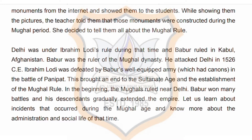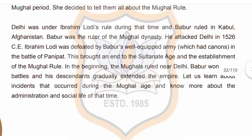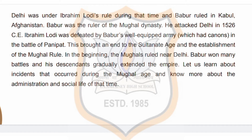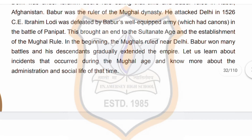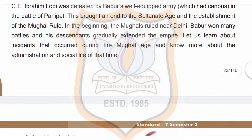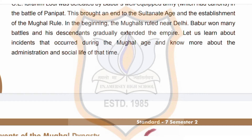Delhi was under Ibrahim Lodi's rule during that time, and Babur ruled in Kabul, Afghanistan. Babur was the ruler of the Mughal dynasty. He attacked Delhi. In 1526 CE, Ibrahim Lodi was defeated by Babur's well-equipped army in the Battle of Panipat. This brought an end to the Sultanate age and the establishment of Mughal rule.